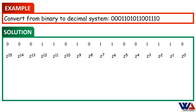Under the first binary digit, the term would be 2 to power 0. Under the second binary digit, the term would be 2 to power 1. And as we move on, it will be 2 to power 2, 2 to power 3, and will continue until we get in the last binary digit, 2 to power 15.